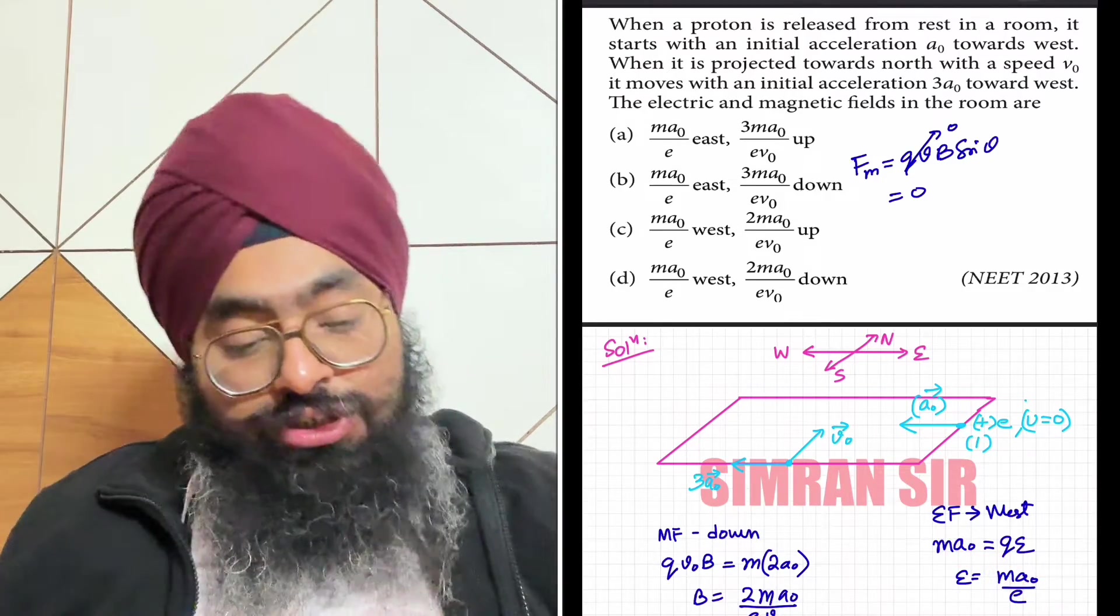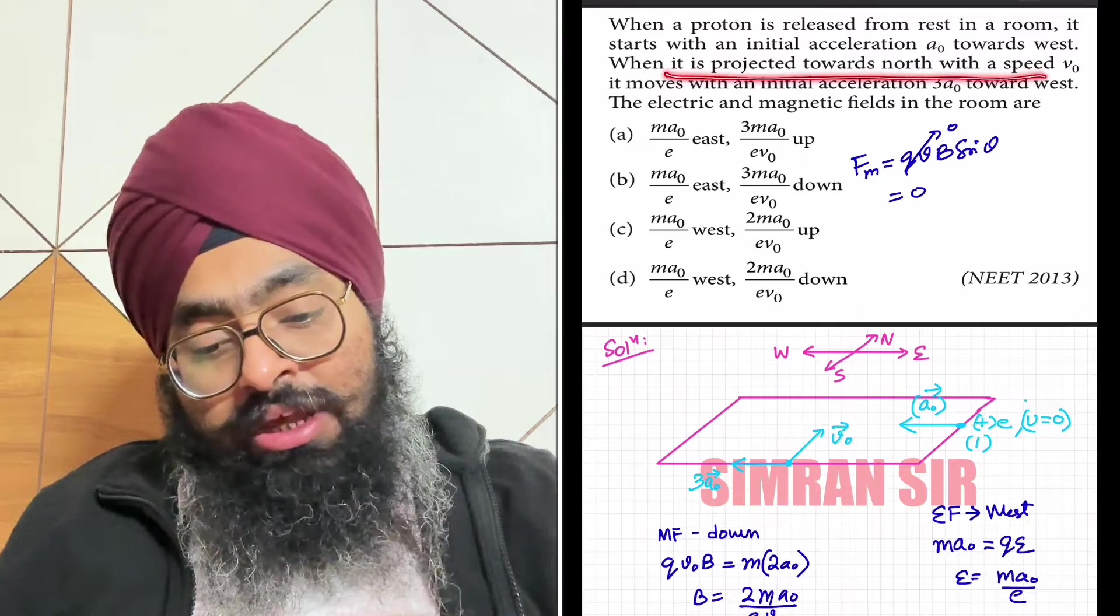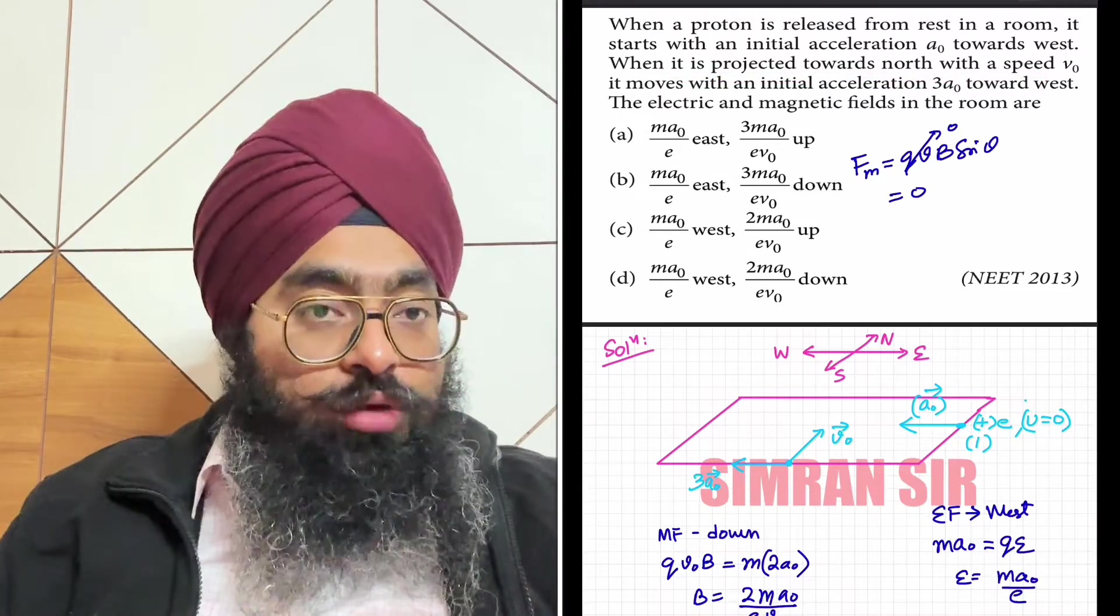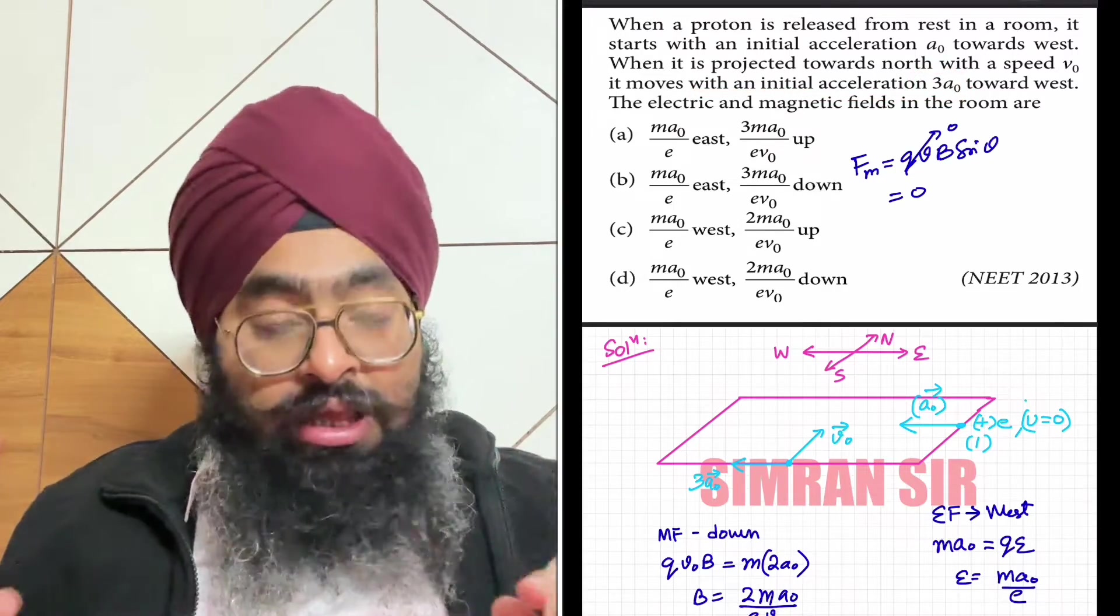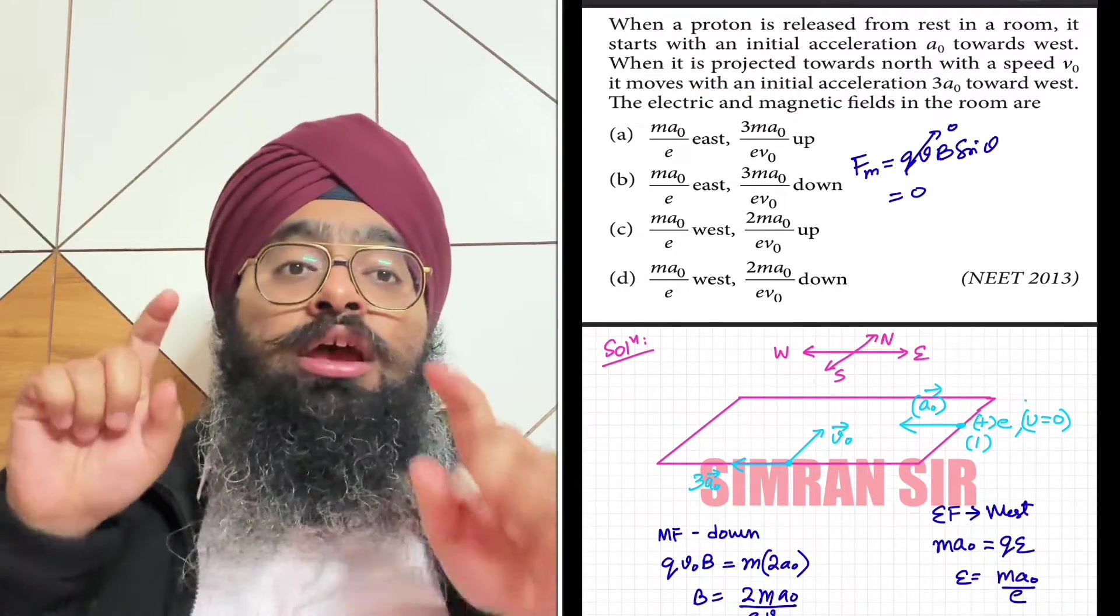Now let's discuss the magnetic field. The question gives another case: when the proton is projected towards north with speed v0, the acceleration is 3a0 towards west. Now it has initial speed, so magnetic force will be present.